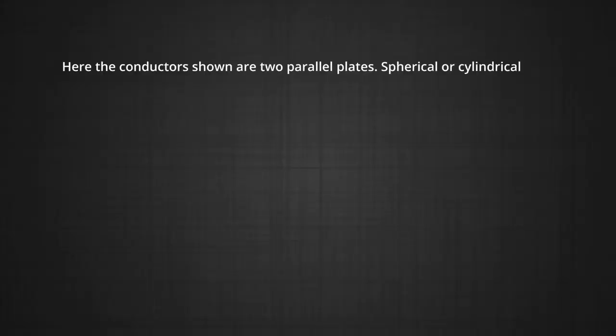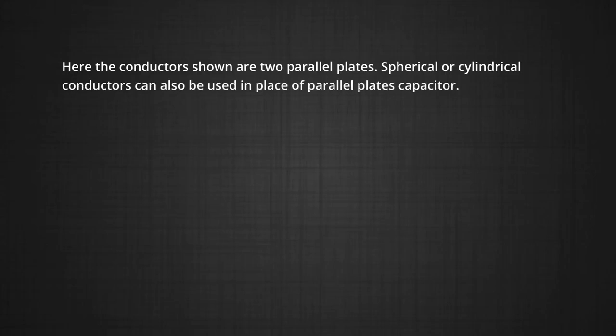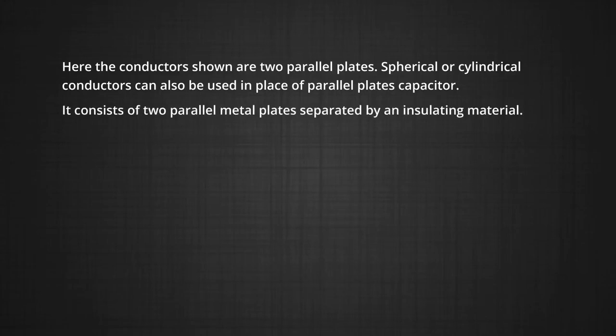The conductors shown are two parallel plates. Spherical or cylindrical conductors can also be used in place of parallel plates. The parallel plate capacitor consists of two parallel metal plates separated by an insulated material.